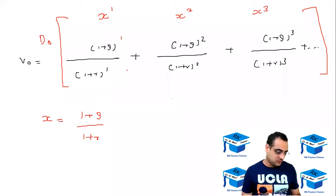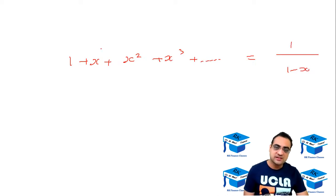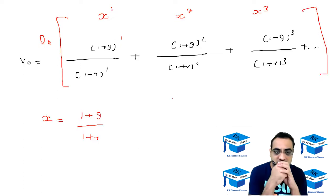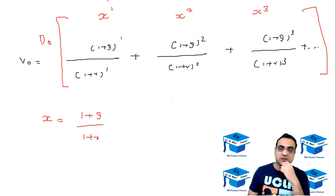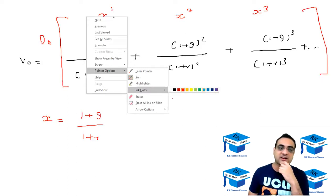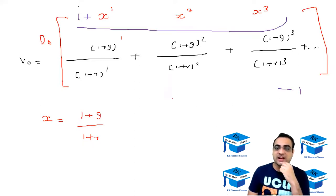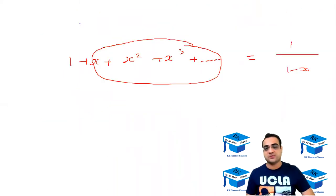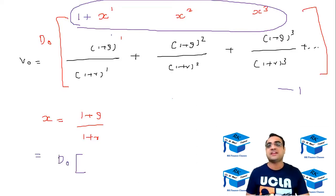The full geometric progression formula is: one plus x plus x squared plus x cubed dot dot dot equals one upon one minus x. What we have is x plus x squared plus x cubed, so the one is missing. So I'll add one and then subtract one later. Now we have one plus x plus x squared plus x cubed, which is the geometric progression, and that equals one upon one minus x, and then there'll be a minus one afterwards.